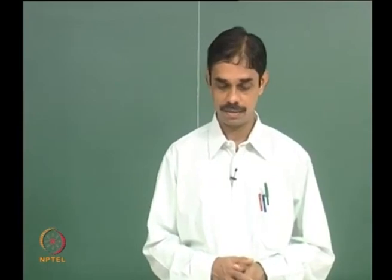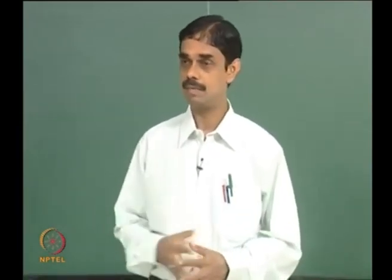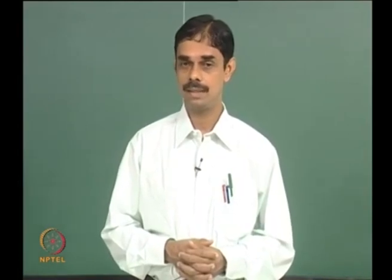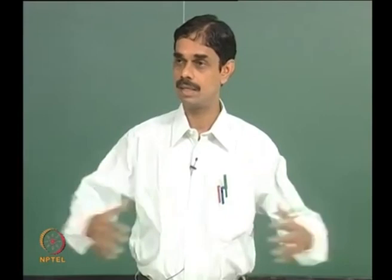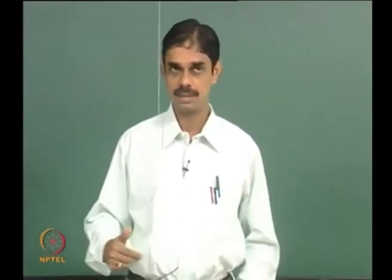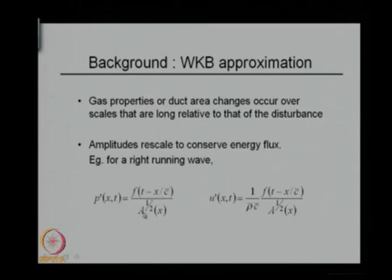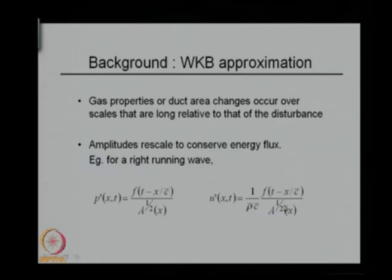To summarize what we talked about last class: we looked at some scaling based on the high-frequency approximation, meaning disturbances are at a much smaller length scale compared to changes in area or temperature. This is traditionally called the WKB approximation. The pressure p(x,t) goes like f(t - x/c), scaled by a factor of x to the power one-half. Similarly, velocity scales by square root of x, and the product of area, pressure, and velocity — which is like power flow — is independent of x.